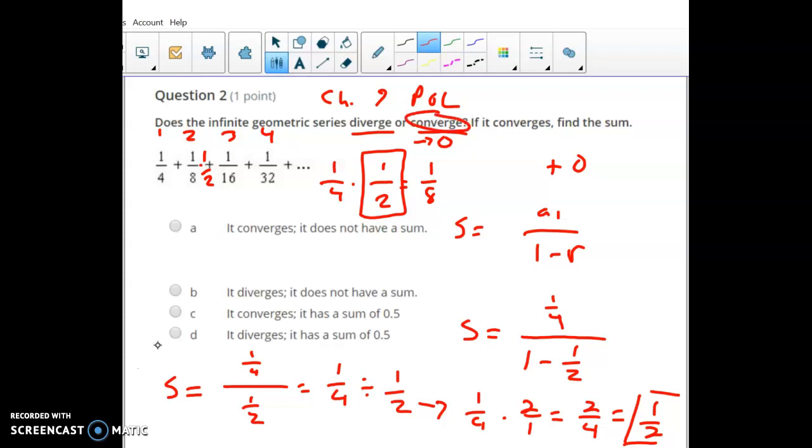So it does converge to 0 and has a sum of 1/2, so letter C should be the right choice on this one. Okay, hopefully that makes sense.